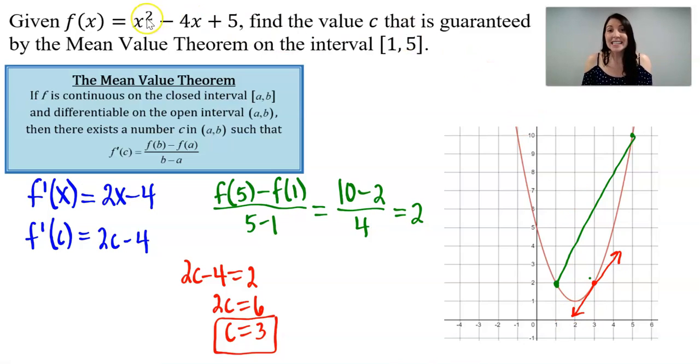So as long as this function, once again, is continuous on the closed interval and differentiable on the open interval, we are guaranteed that there is a number somewhere in this interval such that we found the c value of 3, where the slope of the tangent line at that c value will equal the slope of the secant line between those two points. And that's the mean value theorem.